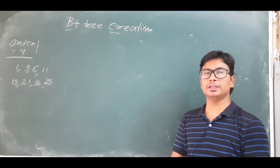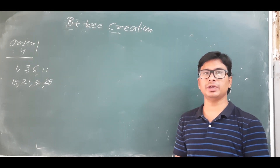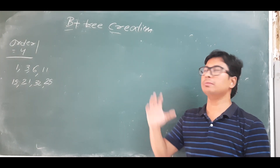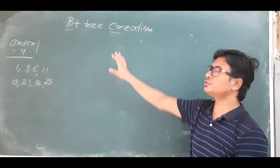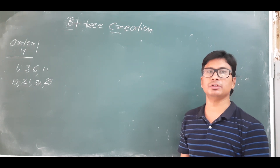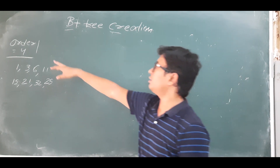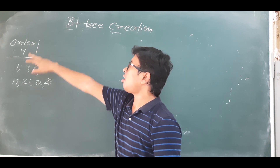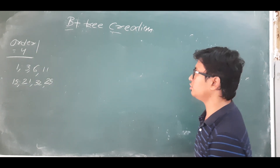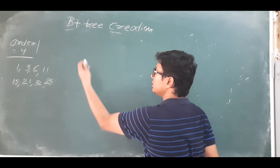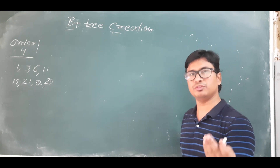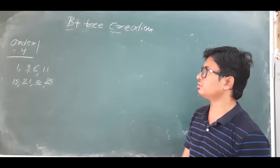Good morning students. In the last video we discussed one example for B+ tree construction. In this video we will discuss another example for better understanding. The order is equal to 4. So the internal node order is equal to 4 and leaf node order is also equal to 4.